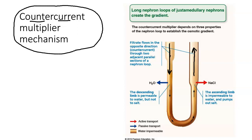The countercurrent is just that opposite flow direction in the descending and the ascending limb. The multiplier mechanism has to do with the fact that what's happening in the descending limb is kind of enhancing what's happening in the ascending limb and vice versa.